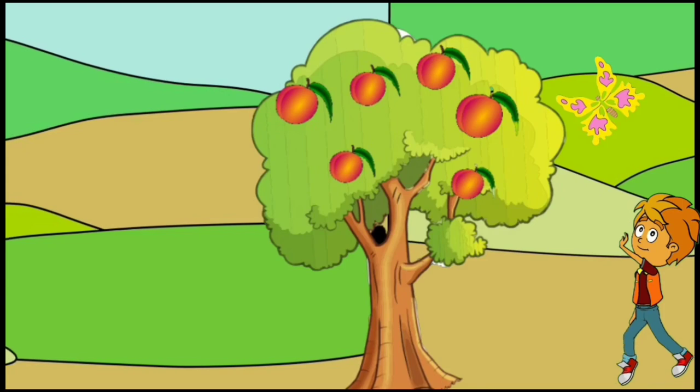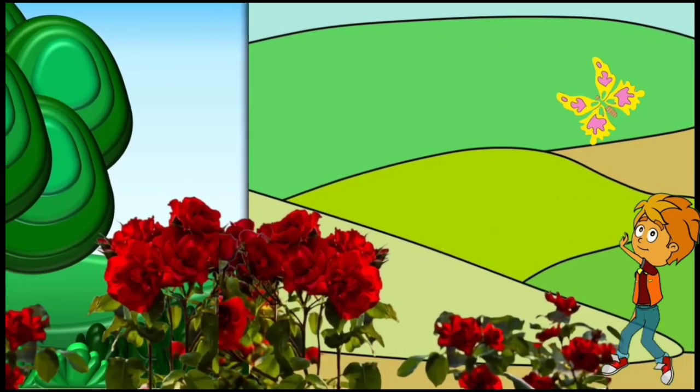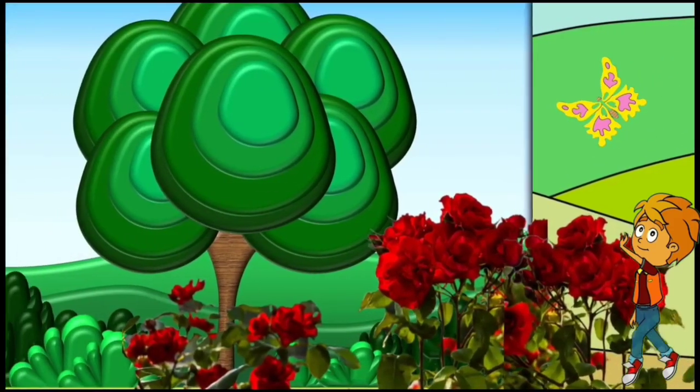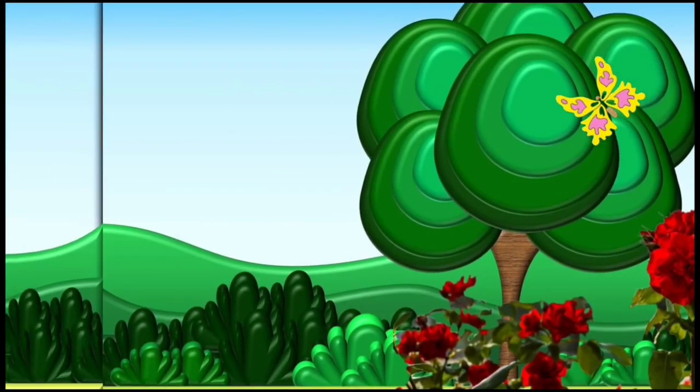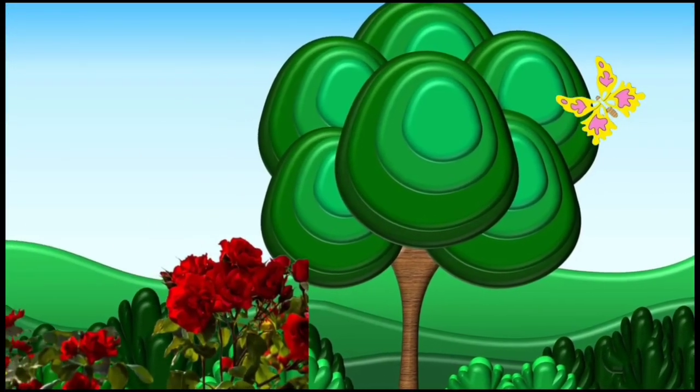It sat on the red rose. It flew to the peach tree, and then sailed on a lotus leaf. It flew merrily from flower to flower. Sonu watched it fly and fly.